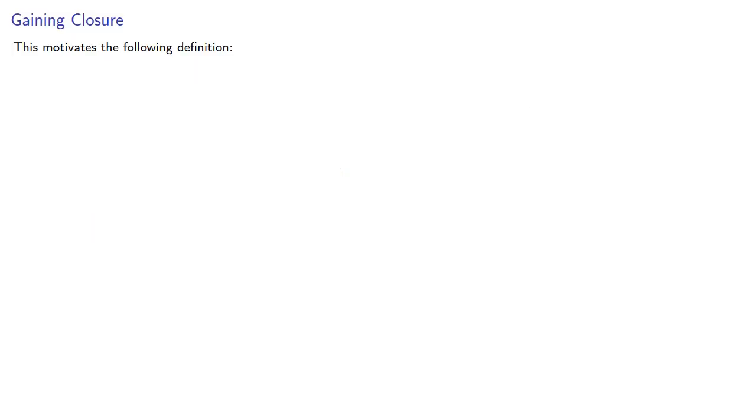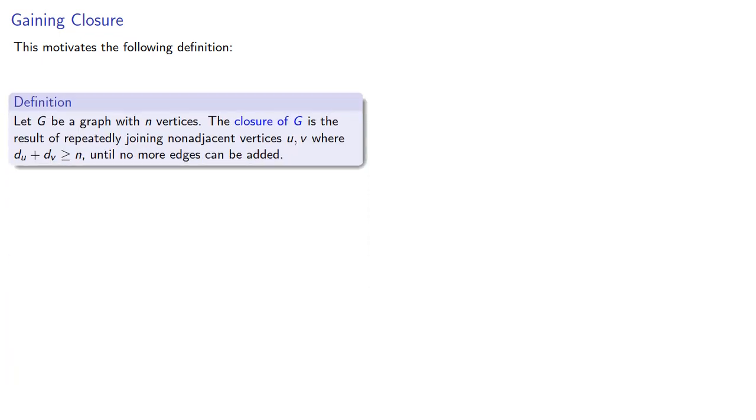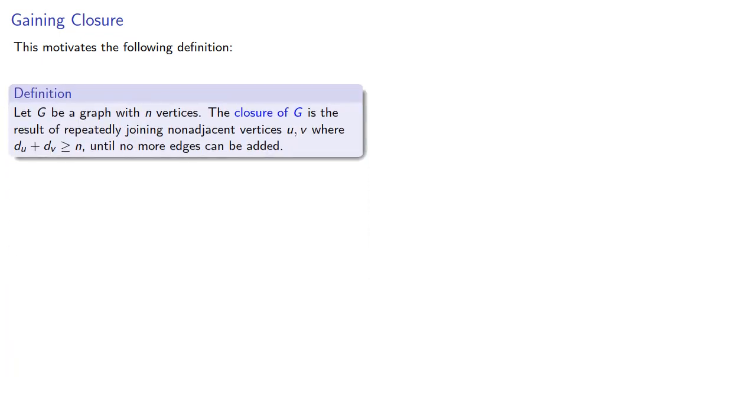This motivates the following definition. Let G be a graph with n vertices. The closure of G is the result of repeatedly joining non-adjacent vertices whose degree sum is at least n until no more edges can be added.